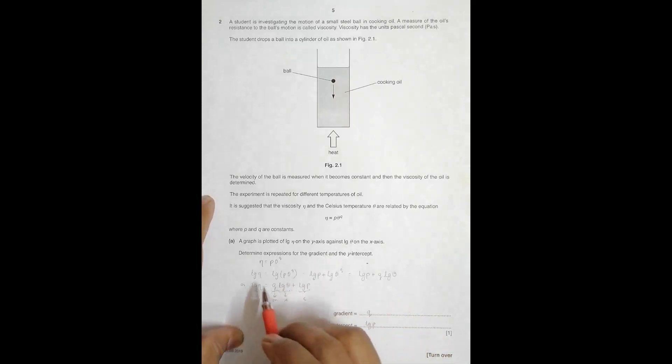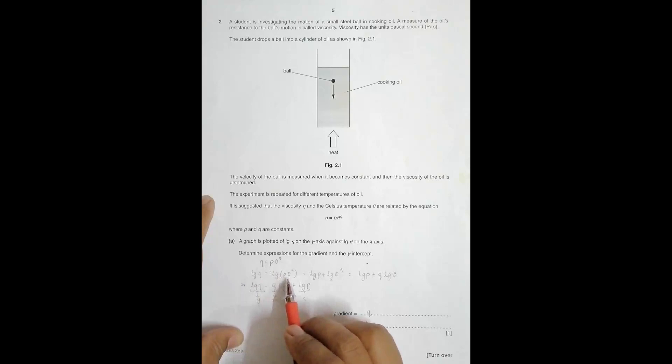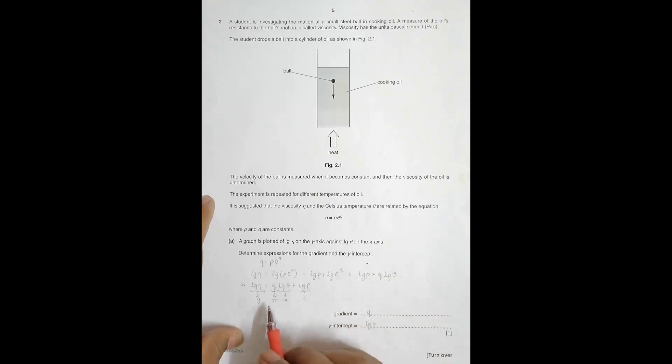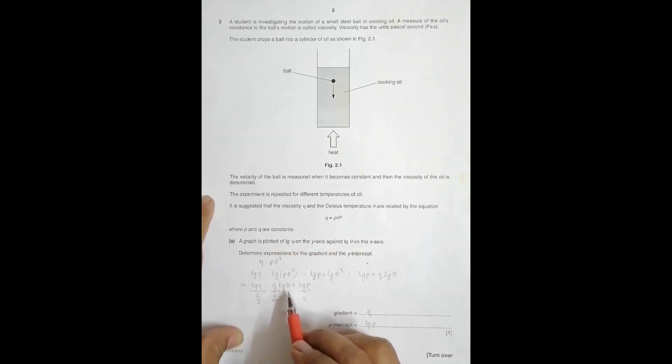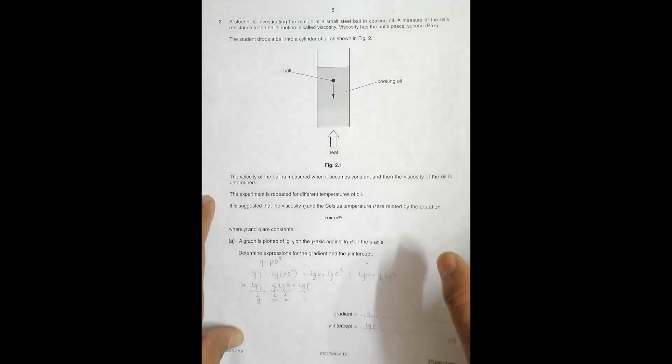The first question asks about a graph plotted of log η on the y-axis and log θ on the x-axis — find the gradient and y-intercept. In the case of powers we take logs: log η = log(pθ^q) = log p + q·log θ. Rearranging to the form y = mx + c, with log θ on the x-axis and log η on the y-axis, the gradient is q and the y-intercept is lg p.